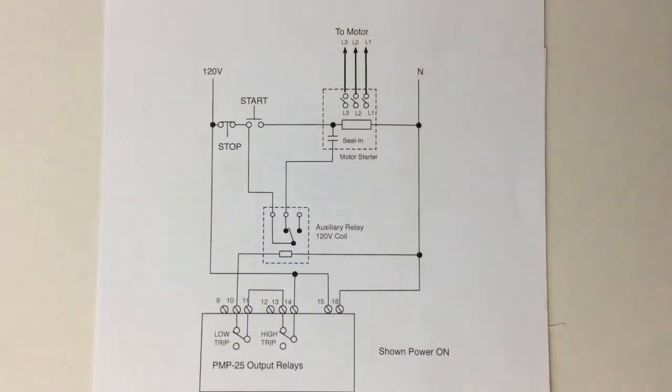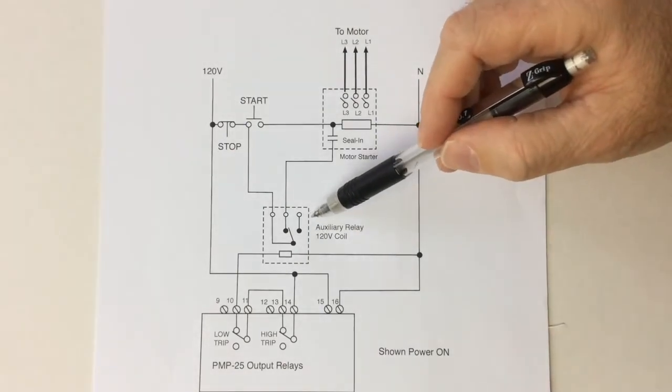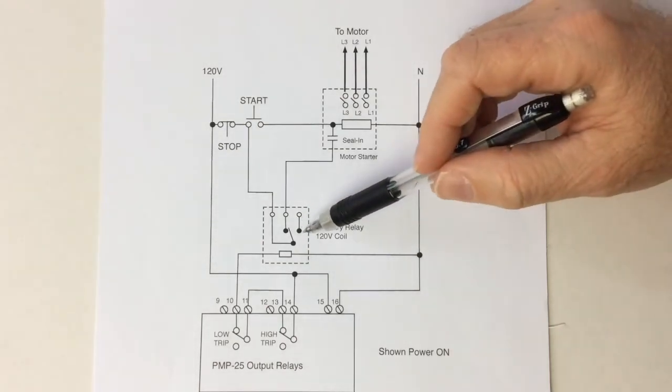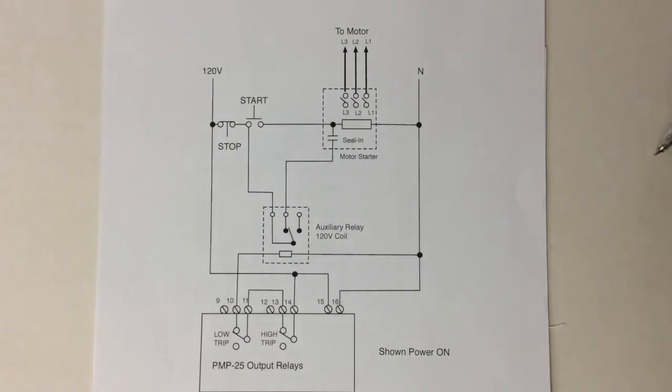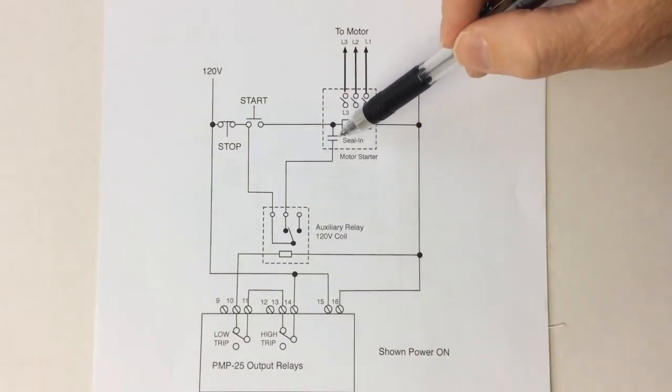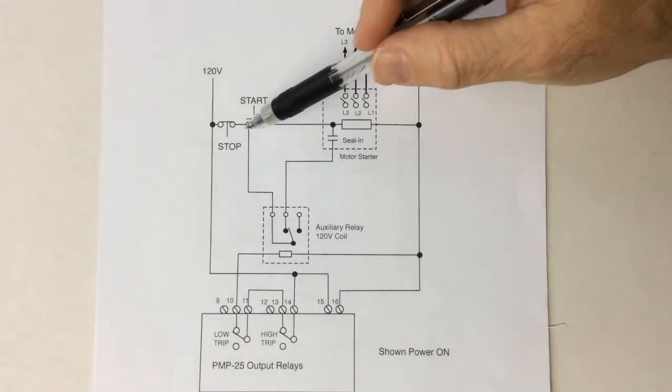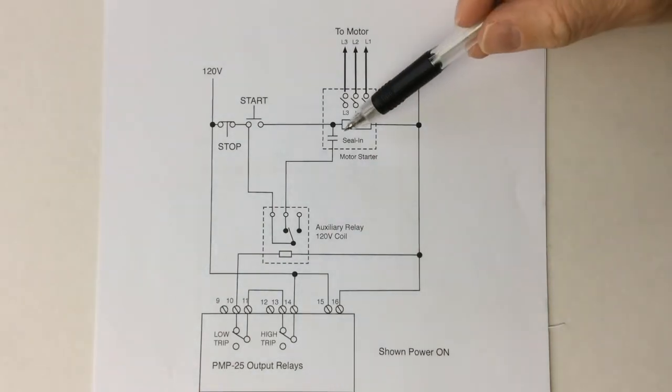This diagram shows an auxiliary relay controlled by the PMP25 and connected to the stop circuit. The contacts of this relay are rated for the larger motor starter. The PMP25 holds the relay coil energized and a normally open contact is held closed in series with the sealant. When the start switch is closed, the starter coil is held on by the sealant to run the motor. If either the stop switch or the PMP25 contacts open, the motor shuts down and is held off by the sealant.